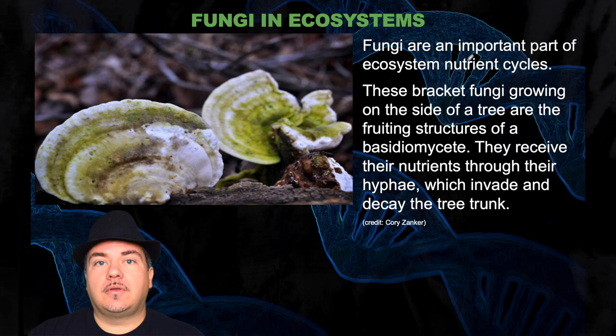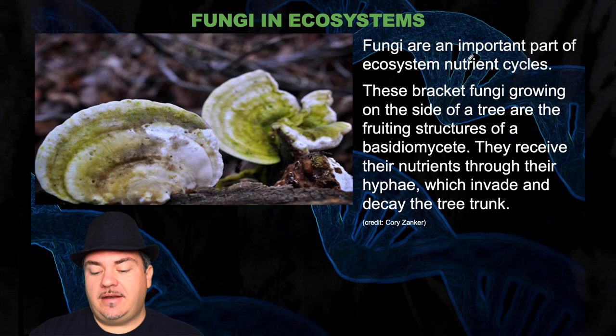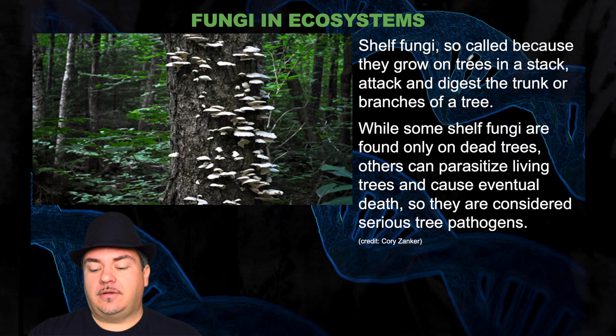Fungi serve multiple roles within our ecosystem. They're an important part of nutrient cycles. For example, bracket fungi grow on the sides of trees and are the fruiting structures of a basidiomycete. They receive their nutrients through their hyphae, which invade and decay the tree trunk. Shelf fungi — called that because they grow on trees in a stack — attack and digest the trunk or branches. While some shelf fungi are found only in dead trees, others can parasitize living trees and cause eventual death, making them serious tree pathogens.